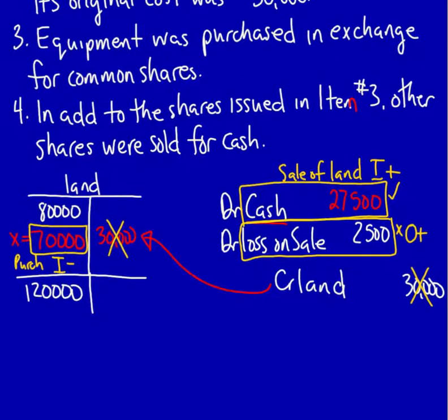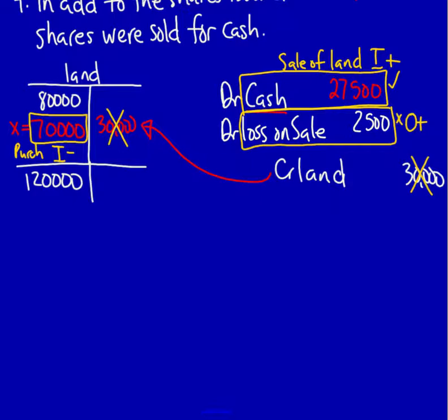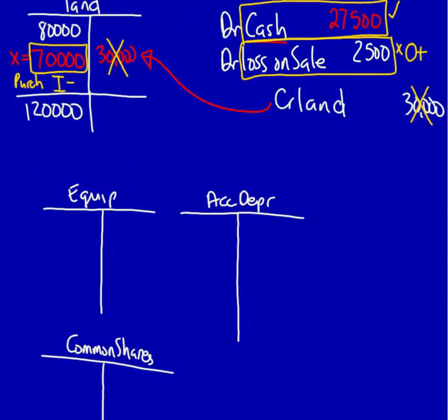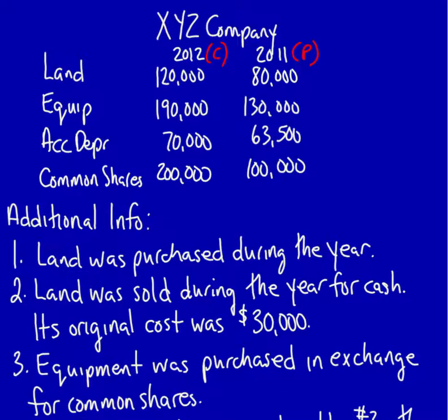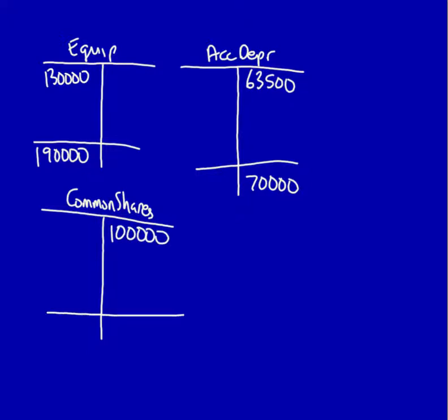What do we do next? We look and say I've got some equipment. Equipment was purchased in exchange for common shares. So I need the common share information and also the equipment. I'm going to start with my blank T-accounts. I got an equipment account, my accumulated depreciation, and I also need common shares. I do not need a sale entry because nothing was sold for equipment. I'm going to fill in everything from my statement of financial position. Equipment, $130,000 at the beginning, $190,000 at the end. Accumulated depreciation starts with $63,500, ends with $70,000. Common shares starts with $100,000 and ends with $200,000.